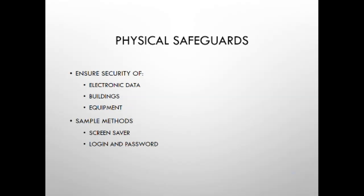Physical safeguards require the practice to design a plan for the receipt, removal, backup, storage, reuse, disposal, and accountability of electronic media such as EHR systems stored on magnetic tape, disk, or memory cards. The practice must know where its information has been, who it was with, and what it was doing there. Only physicians and staff members with an appropriate password can access the program. Physical safeguards ensure security of electronic data, buildings, and equipment — sample methods include screensavers, login, and passwords.